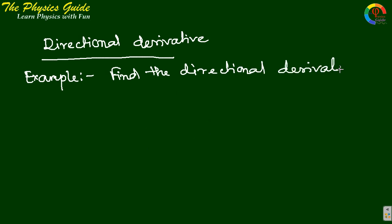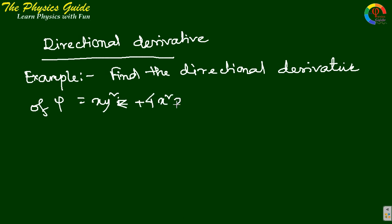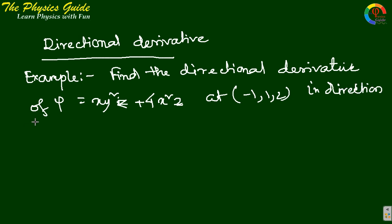We can try an example: find the directional derivative of psi equals x·y²z plus 4x²z, at the point minus 1, 1, 2, in the direction 2i plus j minus 2k. We are given psi and the vector A, so we just need to find the unit vector and grad psi.